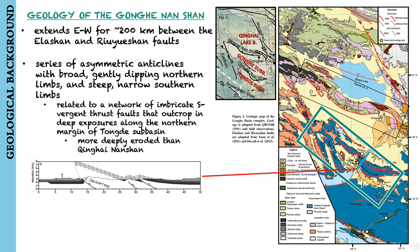Similar to the Qinghai-Nanshan, the Gonghe-Nanshan consists of a series of asymmetric anticlines with broad, gently dipping northern limbs and steep, narrow southern limbs related to a network of imbricate south-vergent thrust faults. The faults outcrop in deep exposures along the northern margin of the Tongde sub-basin. Like the Qinghai-Nanshan, the range exhibits a south-vergent topographic asymmetry, but it appears to be more deeply eroded than its neighbor to the north.